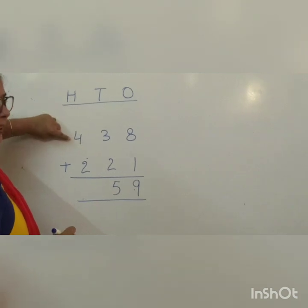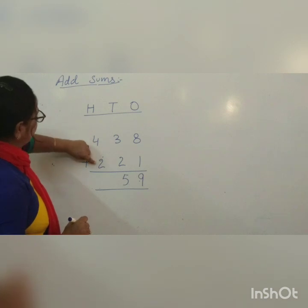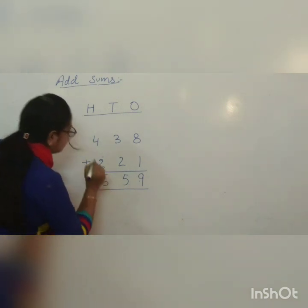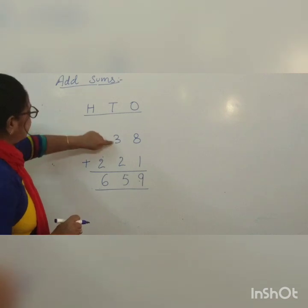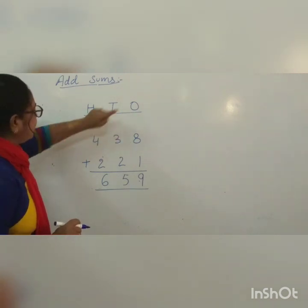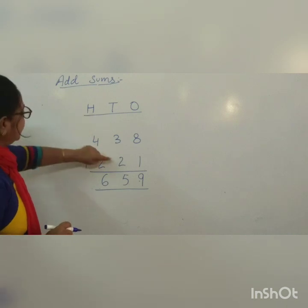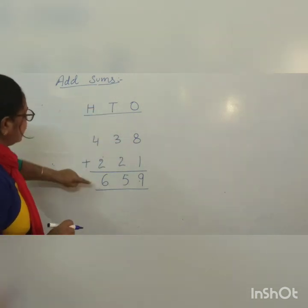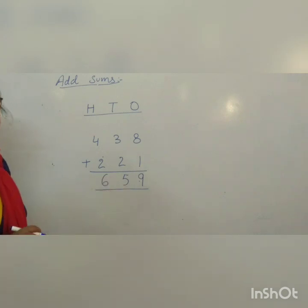Now come to the hundreds place. 4 is the bigger number and 2 is the smaller number. So 4 plus 2 equals 6. So 4 hundreds, 3 tens, 8 ones plus 2 hundreds, 2 tens, 1 one becomes the number 659.